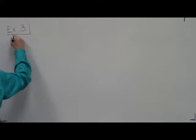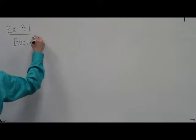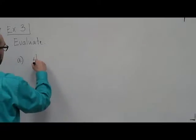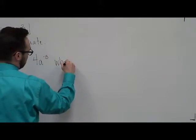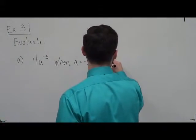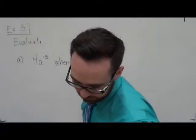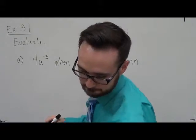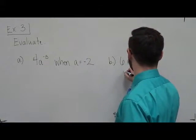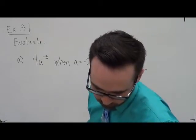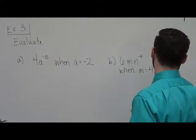So let's take a look at when we evaluate something. We're just going to say evaluate. And the first one is going to be 4a to the negative 5 when a is equal to negative 2. And then we'll have a part b. We'll look at 6mn to the negative 4 when m is equal to 4 and n is equal to 3.